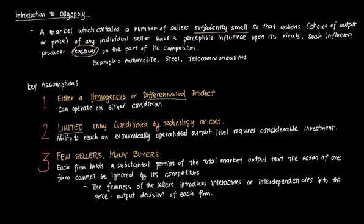The third assumption, and what differentiates oligopoly the most, is that it is characterized by few sellers but still many buyers. A prime example is the smartphone industry — a huge market with generally few sellers, although not all of those sellers may be making a profit. Each firm holds a substantial portion of total market output, such that a specific action of one firm cannot be ignored by its competitors. The fewness of sellers introduces interactions and interdependencies into the price and output decisions of each firm, affecting both pricing and output decisions of other firms in the market.